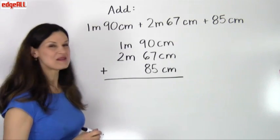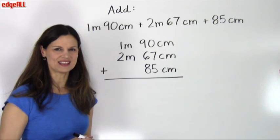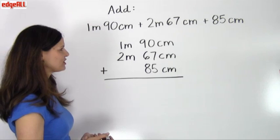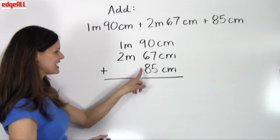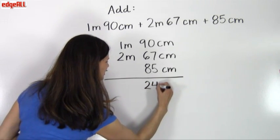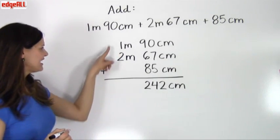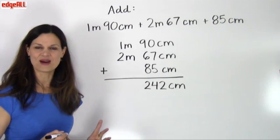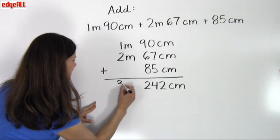So I have all of my measurements lined up vertically, and now I'm simply going to add. So I'll start here by adding my smaller units together: 90 plus 67 plus 85, which equals 242 centimeters. And then I add my larger units here: 1 meter plus 2 meters, which equals 3 meters.